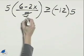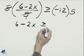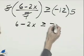On the left, 5 divides itself away, and we have 6 minus 2x greater than or equal to negative 12 times 5, which is negative 60.